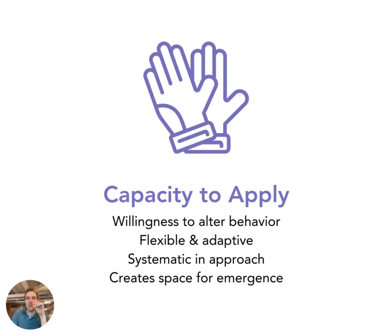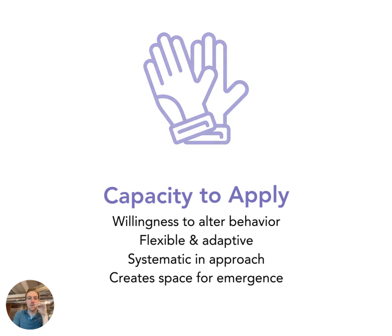Capacity to apply. So yes, this is all about moving away from systems thinking just as a set of ideas and models, but really about personal attributes — about how you show up in the world, how you behave and act, and of course apply within your particular area. So it's a willingness to alter behavior, very important to be flexible and adaptive, systemic in your approaches, and create space for emergence. People who are really reflective of this in any area will always be moving away from solutions and really thinking about creating space for bringing people together and trying to make emergence happen in some way.